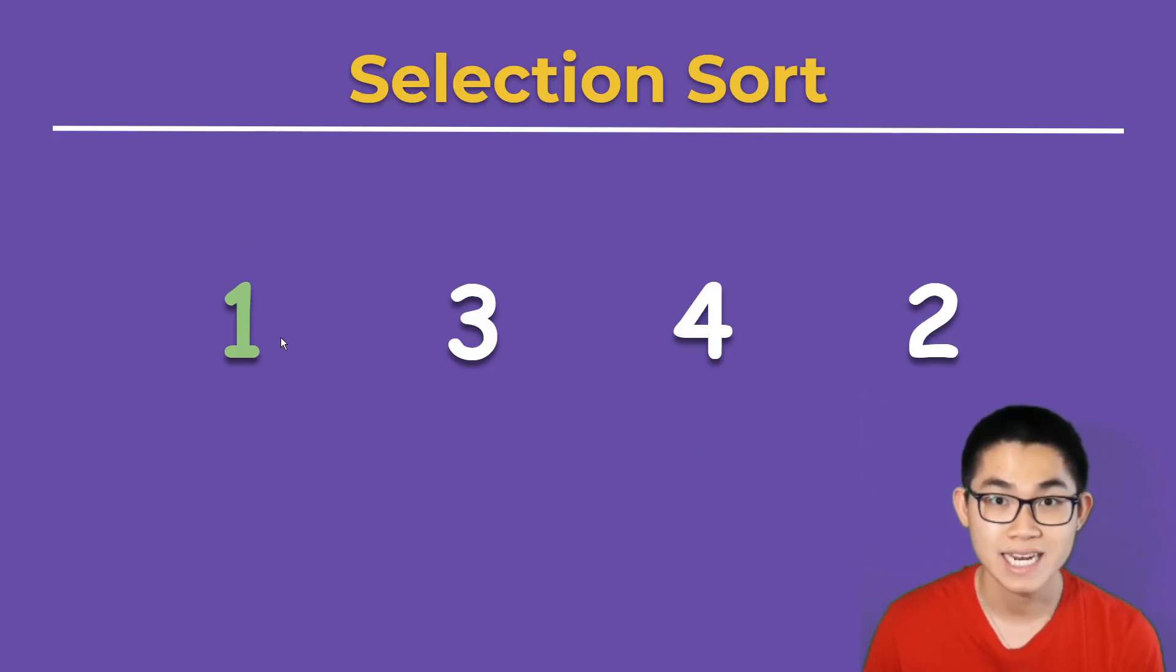Now, we know that 1 is in its correct place, and we repeat this process. We put A on the array. Assume 3 is the smallest number. Put B next to A. 4 is not smaller than 3. 2 is smaller than 3, so 2 becomes the next smallest number.